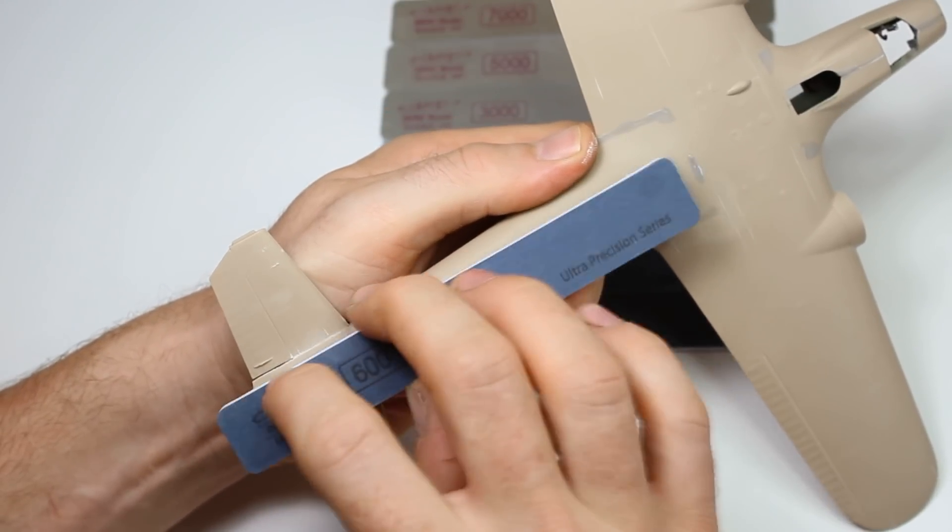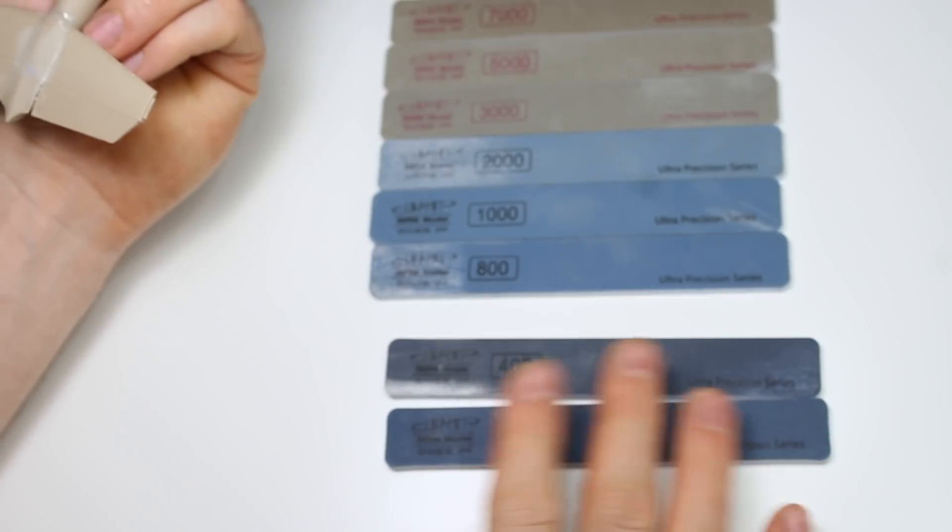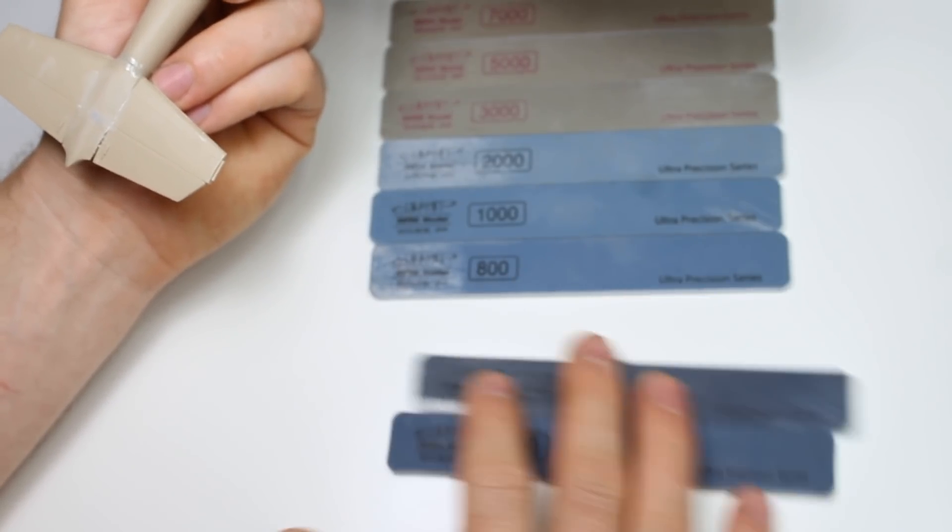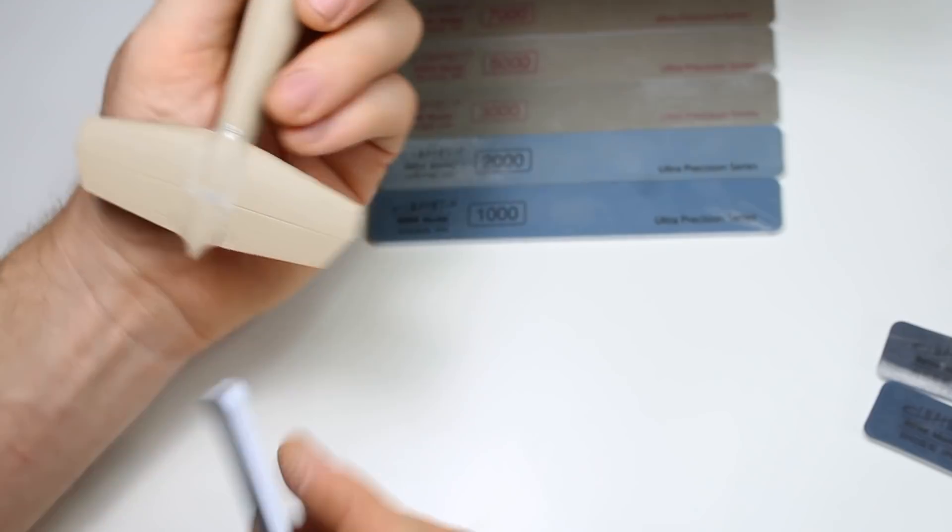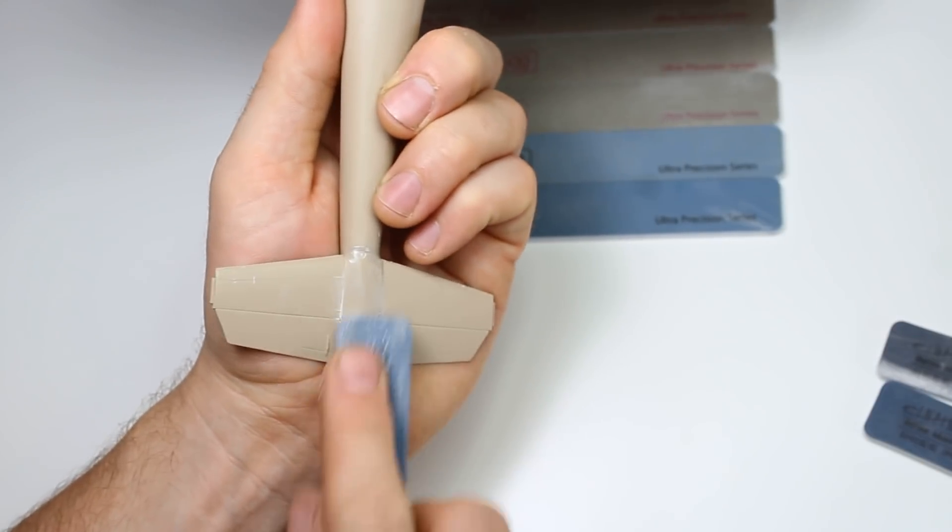Right, so that's that. For the sanding side of things, maybe the 800 as well you could come in, but I don't think you need to. You're almost ready for paint there just by using the 400 and the 600.